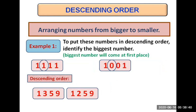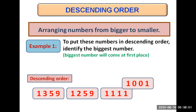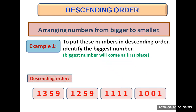The number with one at its hundreds place comes at third place, as one is greater than zero, which is the hundreds digit of the last number. The remaining number comes at last place. This is how we have ordered these four-digit numbers in descending order, putting the largest number at first place and the smallest number at last place.